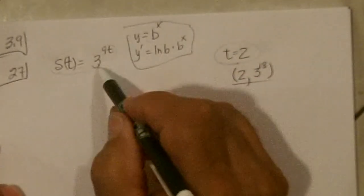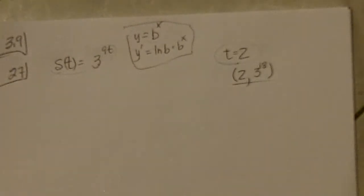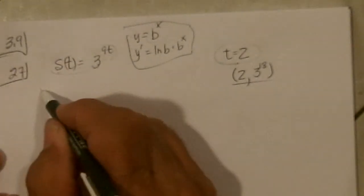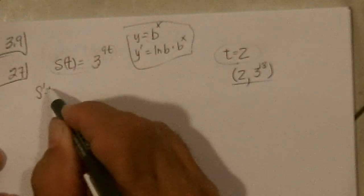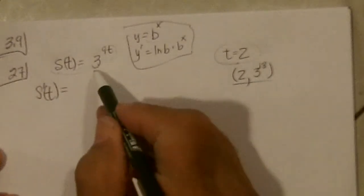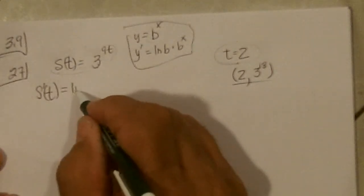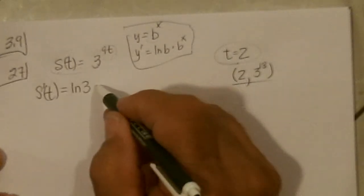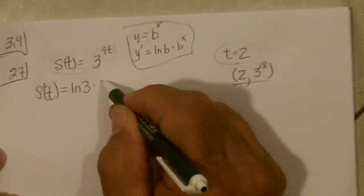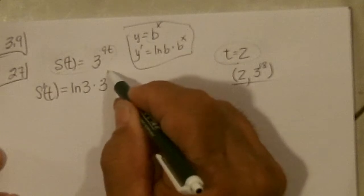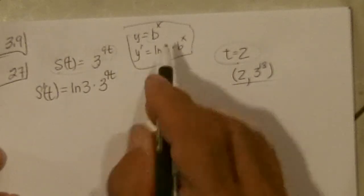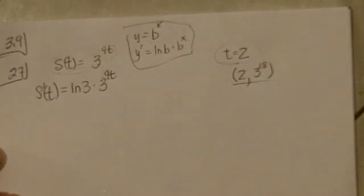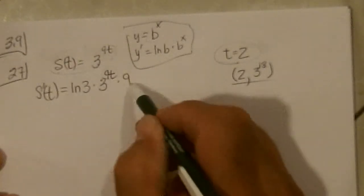That's our rule when the base is not a nice one. So we just do that. So S prime of T equals ln 3 times 3 to the 9T times the derivative of the exponent, which is times 9.